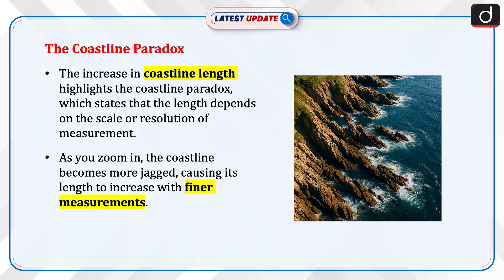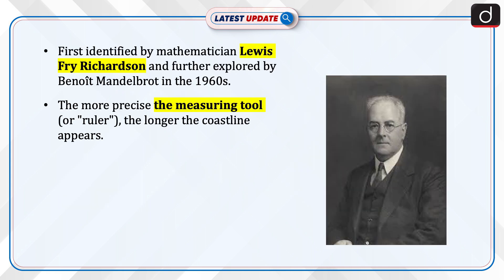The increase also highlights the famous coastline paradox, which states that the length of a coastline cannot be precisely measured because it depends on the scale or resolution at which it is measured. As you zoom in on a coastline, it becomes more jagged and irregular, meaning the length increases the finer the measurements become. This paradox was first identified by mathematician Lewis Fry Richardson and further explored by Benoit Mandelbrot in the 1960s. The more precise the measuring tool, or ruler, the longer the coastline appears.